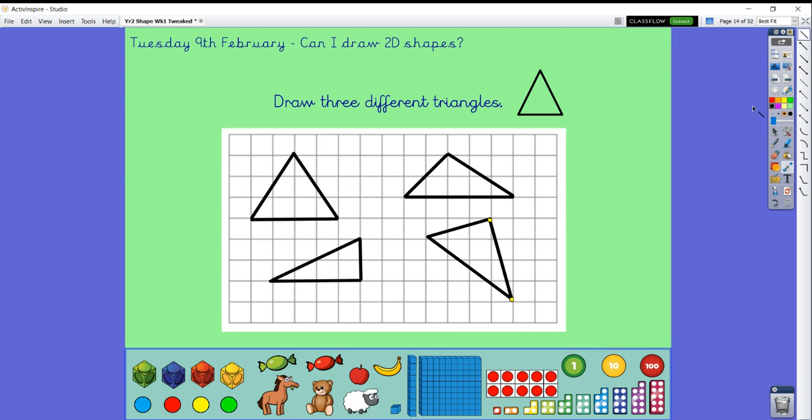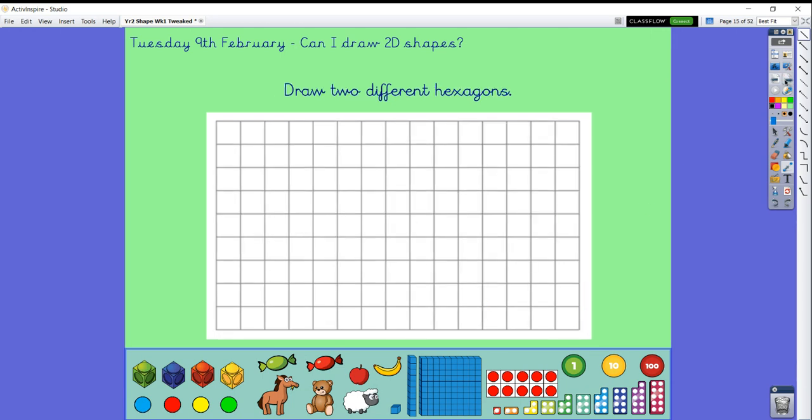Let's have a think about a different shape then. What about a hexagon? Can you have a go at doing two different hexagons? Remember, what do you know about a hexagon?